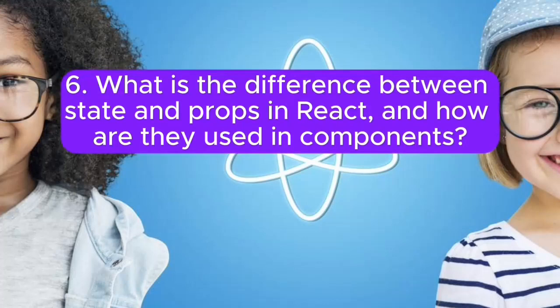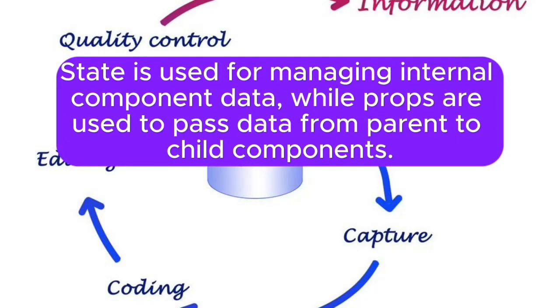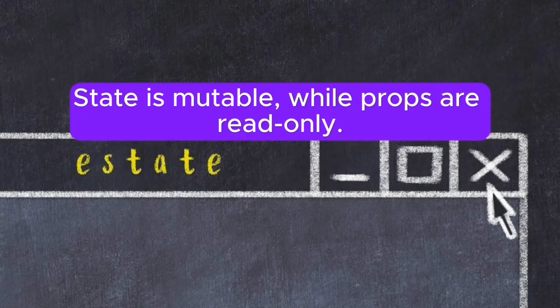6. What is the difference between state and props in React, and how are they used in components? Answer: State and props are both used to manage data in React components. State is used for managing internal component data, while props are used to pass data from parent to child components. State is mutable, while props are read-only.